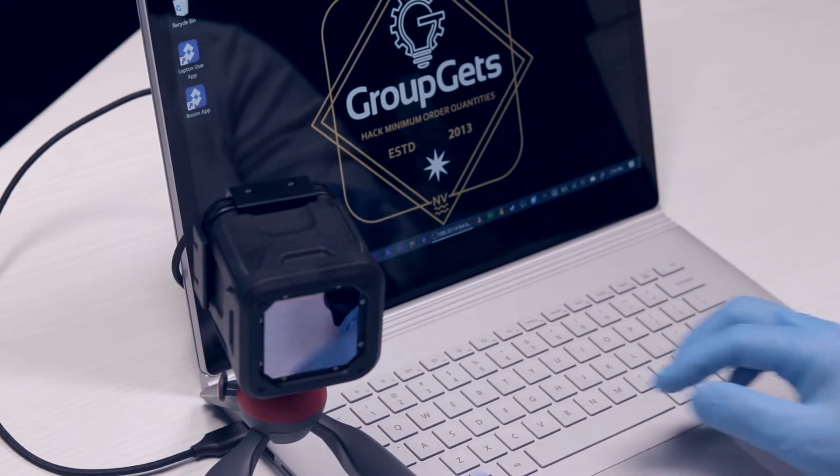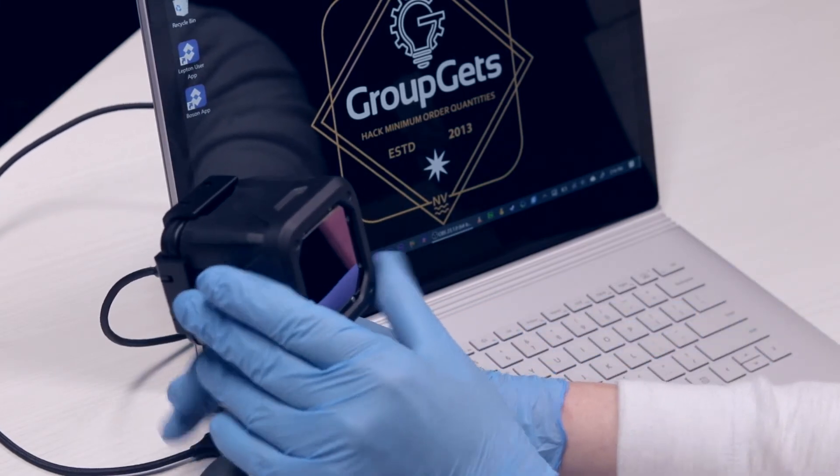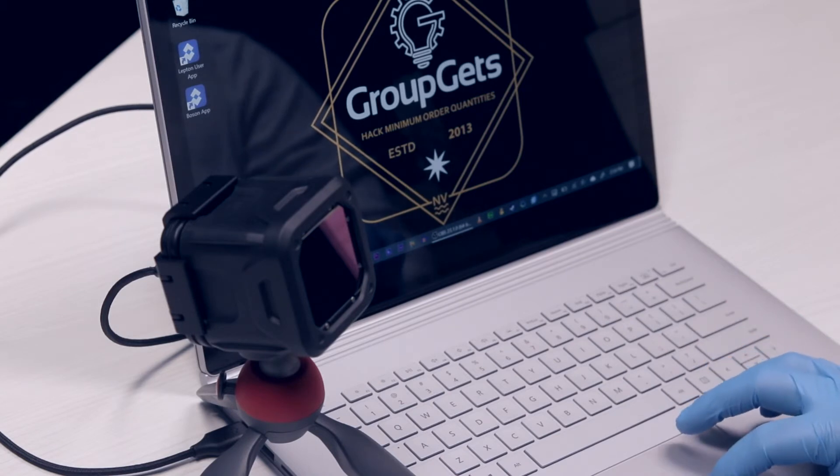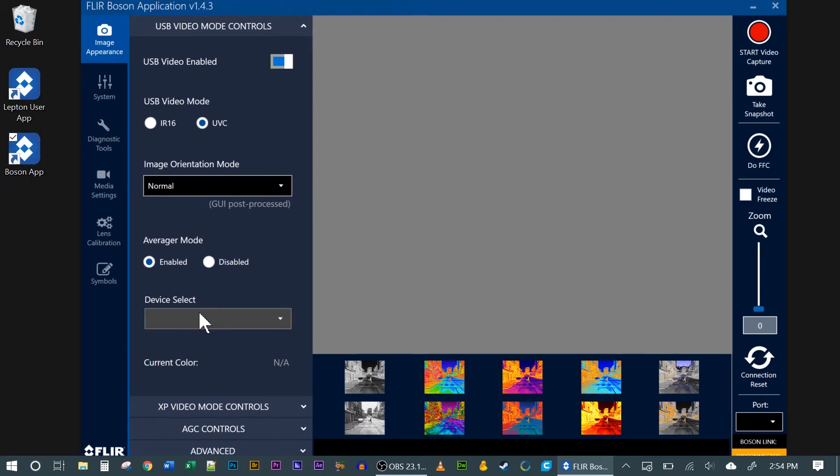Now we can plug it in and run the FLIR Boson software for Windows. The Boson will also work on a Mac with GroupGet's GetThermal software, and will work on any other operating system with programs like VLC.